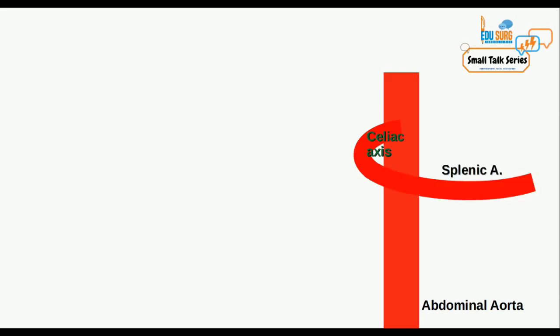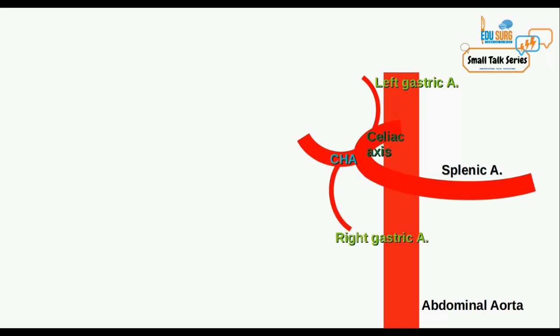As we all know, the abdominal aorta gives the celiac axis, and the celiac axis has three branches: the splenic artery, the left gastric artery, and the common hepatic artery. Then the common hepatic artery gives rise to the right gastric artery and the gastroduodenal artery, and the point beyond the gastroduodenal artery is called the proper hepatic artery, or hepatic artery proper.